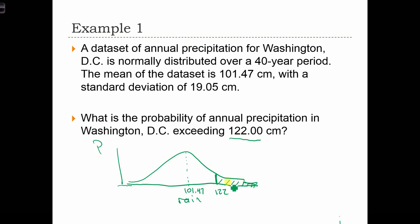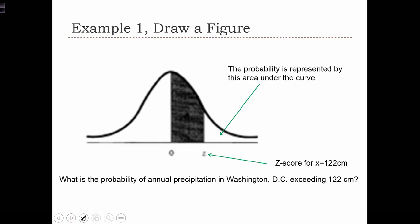So in order to find this area, we're going to use our table. But the next step is we're going to have to transform this 122 into a z-score. Here's just a neater drawing of what I was trying to do in the previous slide. Here's the normal curve, the one from our table. We're looking for the area to the right of the z-score that's 122.